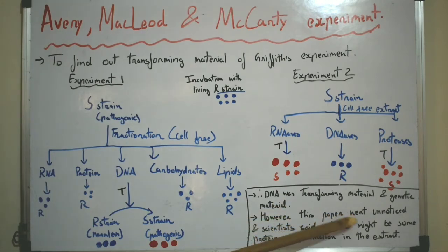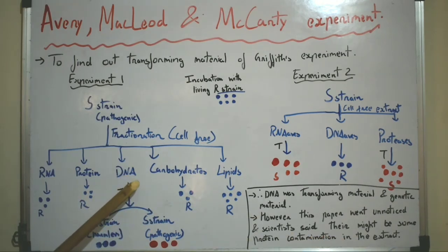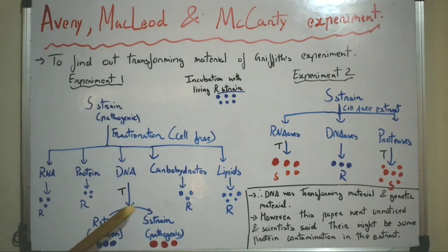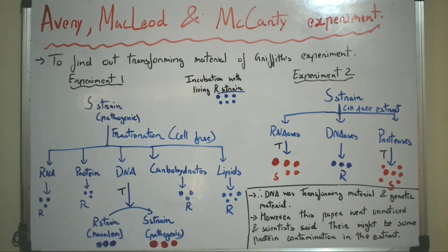However, this paper went unnoticed, and scientists said that there might be some protein contamination in the isolated DNA fraction, and therefore it was converting R-strain into S-strain. So the concept that DNA is the genetic material was still not widely accepted even after this experiment.